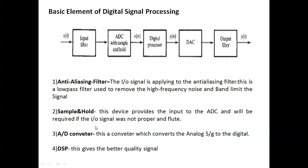The basic elements of digital signal processing form a block diagram consisting of: input filter, ADC, sample and hold circuit, digital processor, DAC, and output filter. The input is a continuous time signal x(t). The input filter is an anti-aliasing filter, which is a low-pass filter. It removes high frequency components because it is a band-limited signal, and this reduces the aliasing effect.